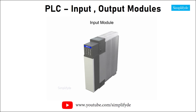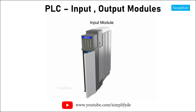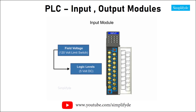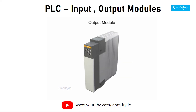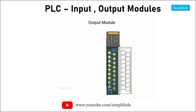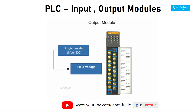The input module of a PLC converts field voltages, such as a 120 volt limit switch, to 5 volt DC logic levels. Output modules perform the same function but in reverse order, where 5 volt DC is converted to field voltages to control devices such as 120 volt relay coils.